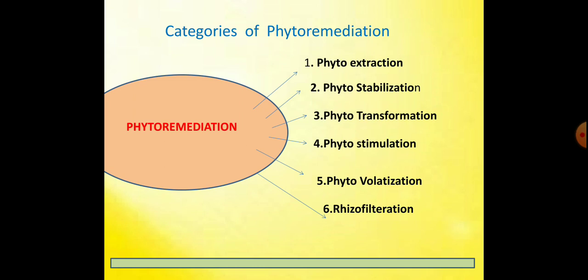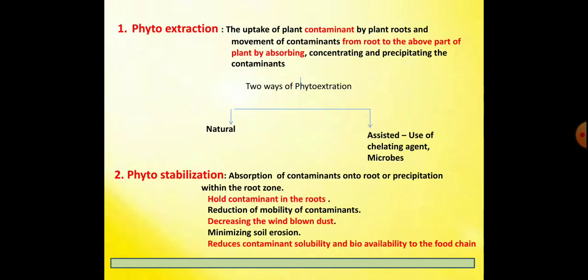There are actually six categories of the phytoremediation process. First is phytoextraction, second is phytostabilization, third is phytotransformation, fourth is phytostimulation, fifth is phytovolatilization, and sixth is rhizofiltration.